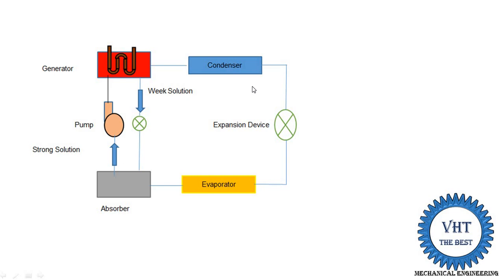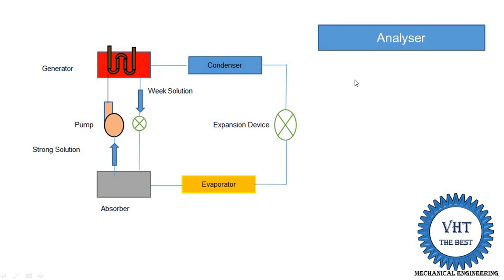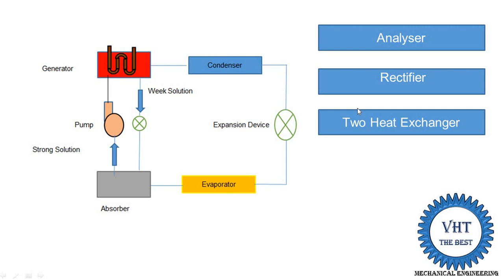This simple system is not economically useful, so we are adding some components to convert it into the practical vapor absorption refrigeration system. In this simple vapor absorption refrigeration system, we are adding four components: the first component is the analyzer, the second component is the rectifier, and two heat exchangers. Adding these four components converts it into the practical vapor absorption system and increases the performance of the system.